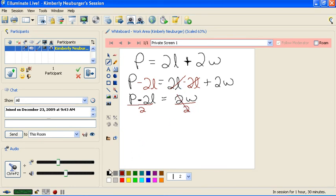The 2's over here cancel to just make one W. And that W is P minus 2L all over 2. Now, if you don't like seeing it in this form, you could flip everything over to have W equal P minus 2L over 2.